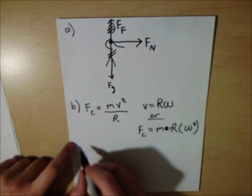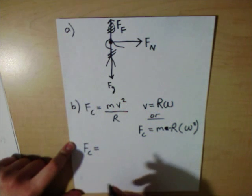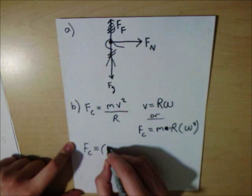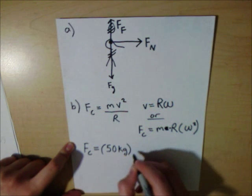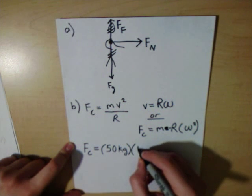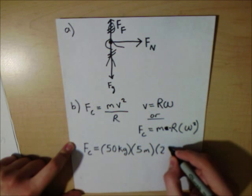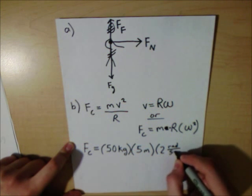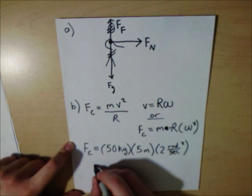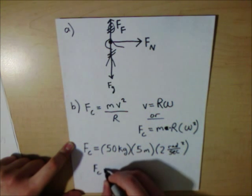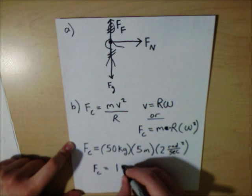So now we plug in our numbers. We have centripetal force equals 50 kilograms times 5 meters times 2 radians per second, and that is squared. So we have the centripetal force is equal to 1,000 newtons.